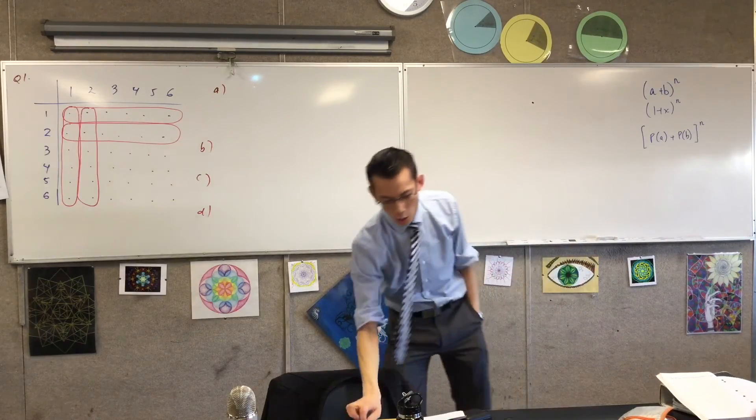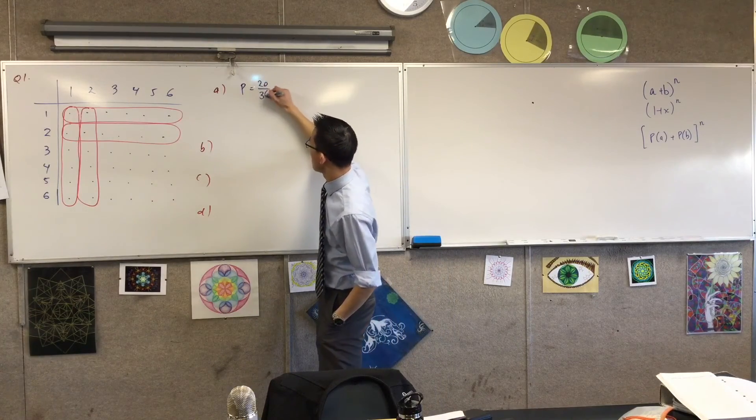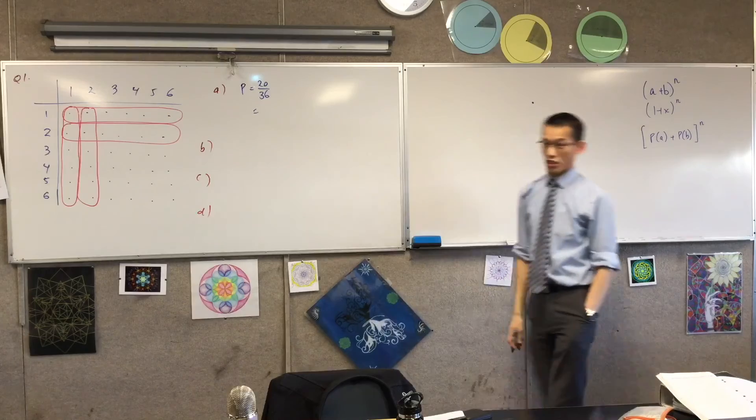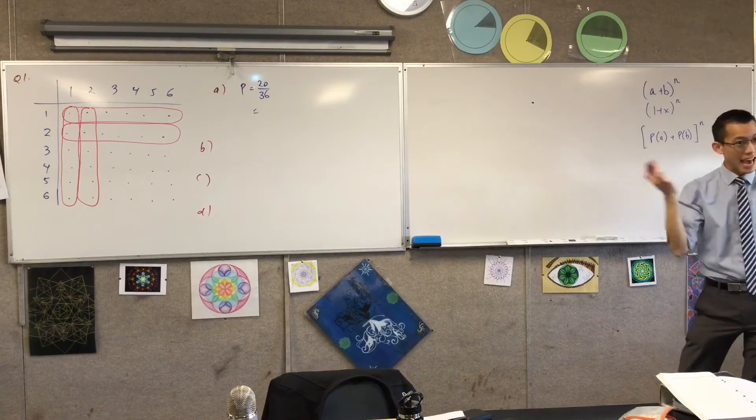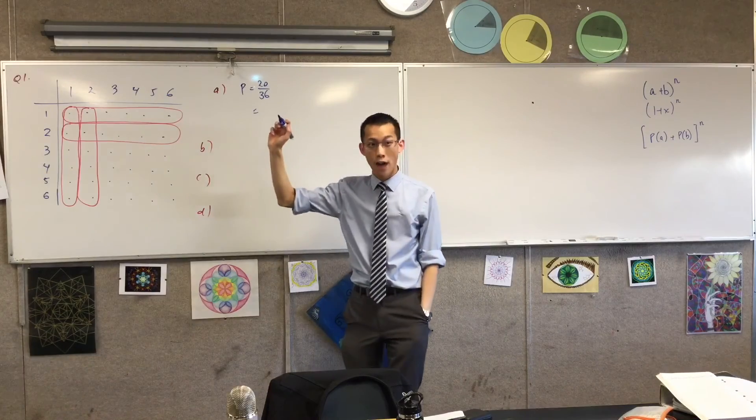I have circled 20. So all I need to say is that the probability is 20 on 36. I think it's highly advisable to write down the actual fraction, and then if you want to simplify, that's going to be 5 over 9.